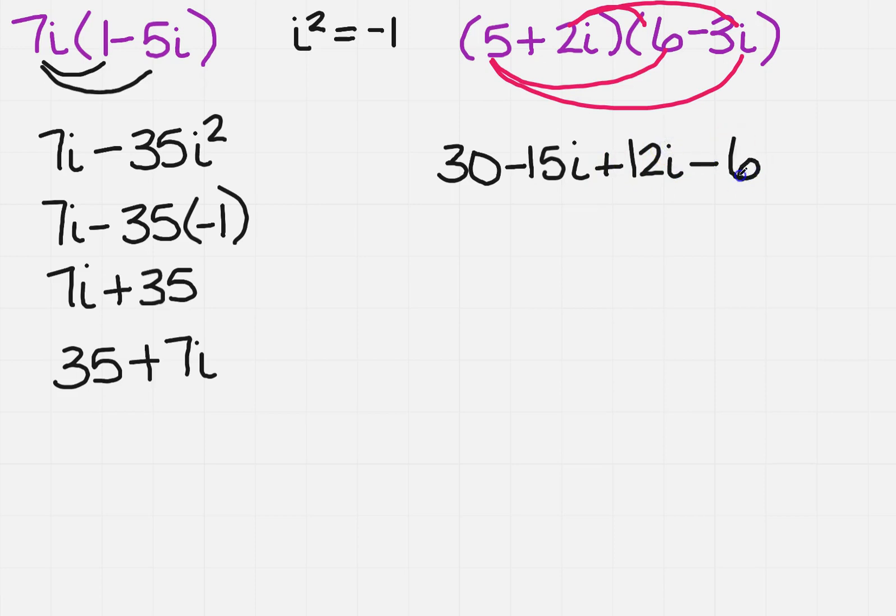minus 6i squared. So I notice I've got sets of i's, so I'm going to have to combine those. So 15 and 12, I've got minus 3i.